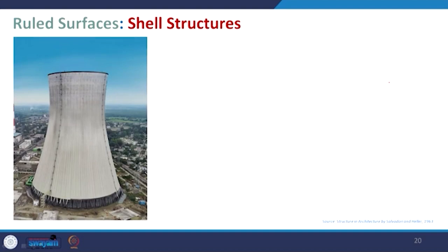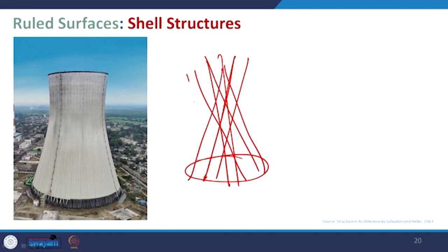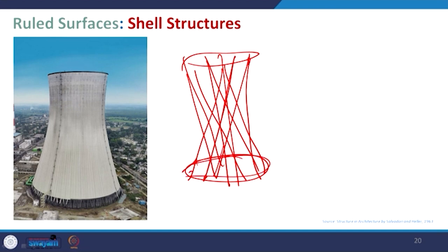The ruled surface is where you have a circular base, select one member, and rotate it at a different angle in a pattern. Repeating this with the same angle gives a form like a twisting tower. The cooling tower is a classic example of a ruled surface.